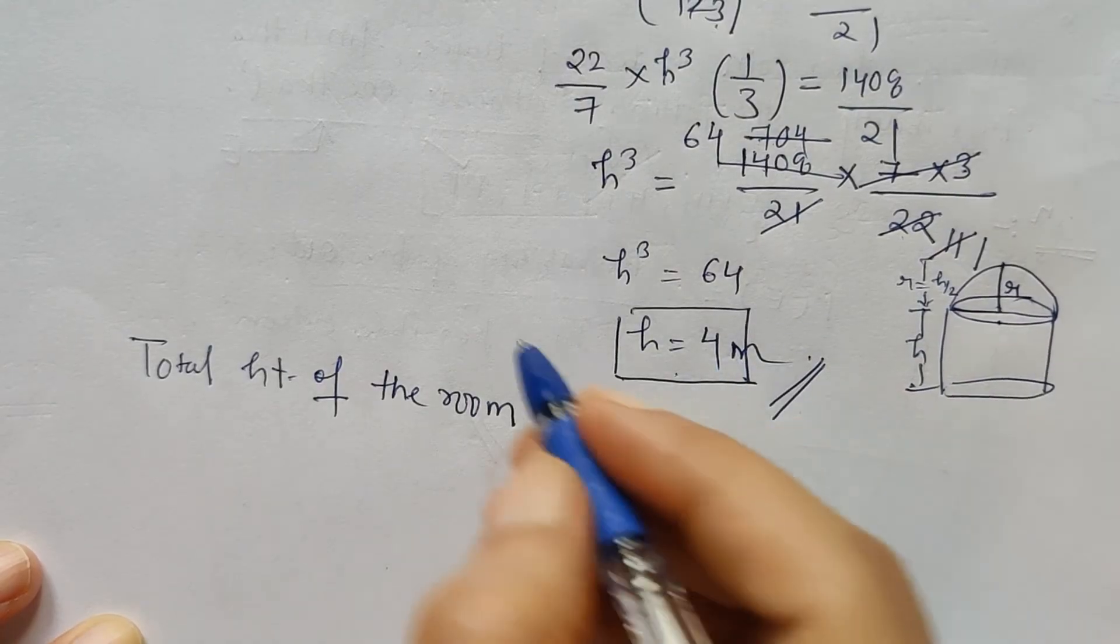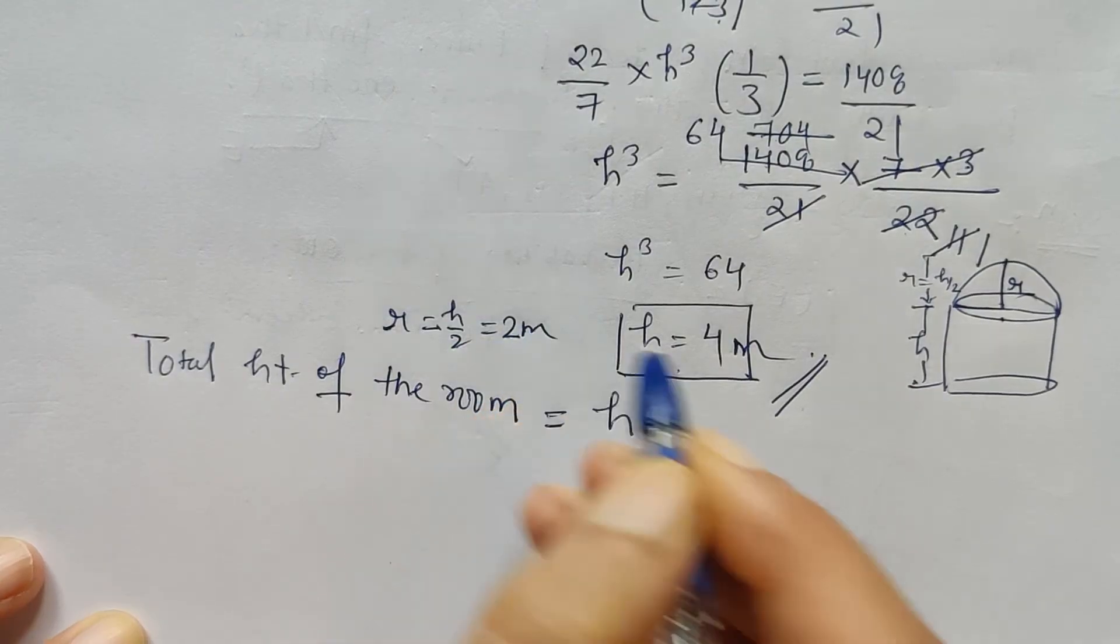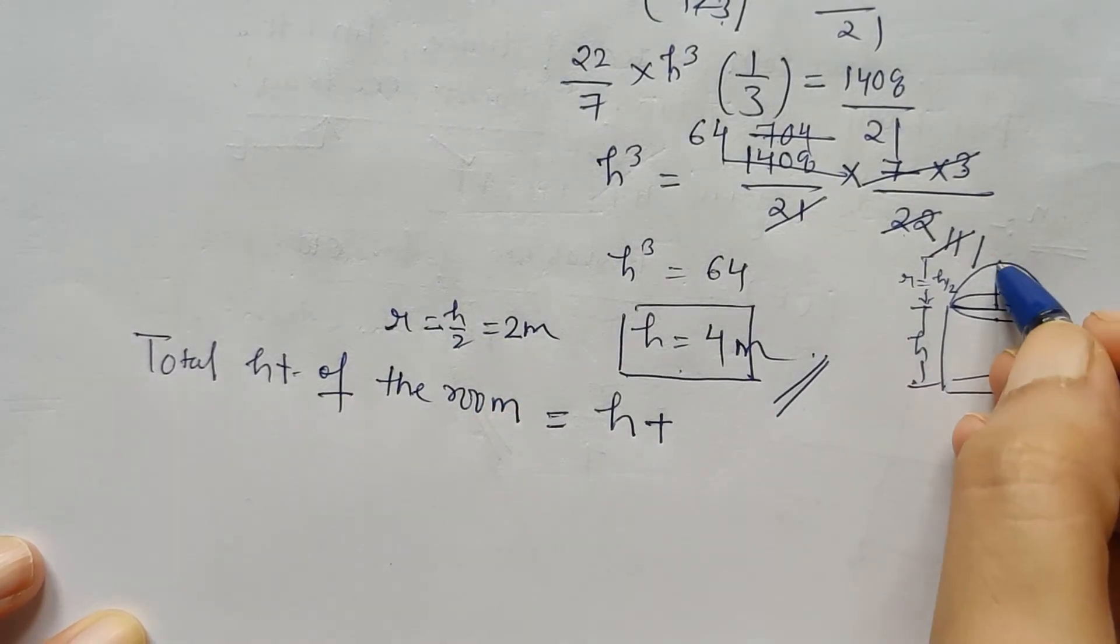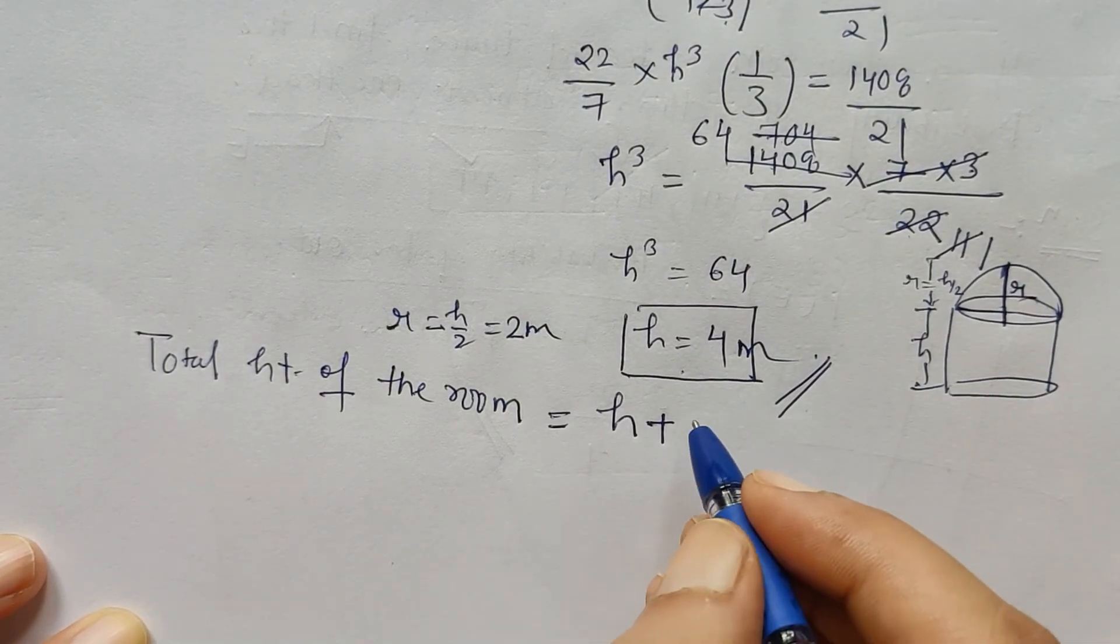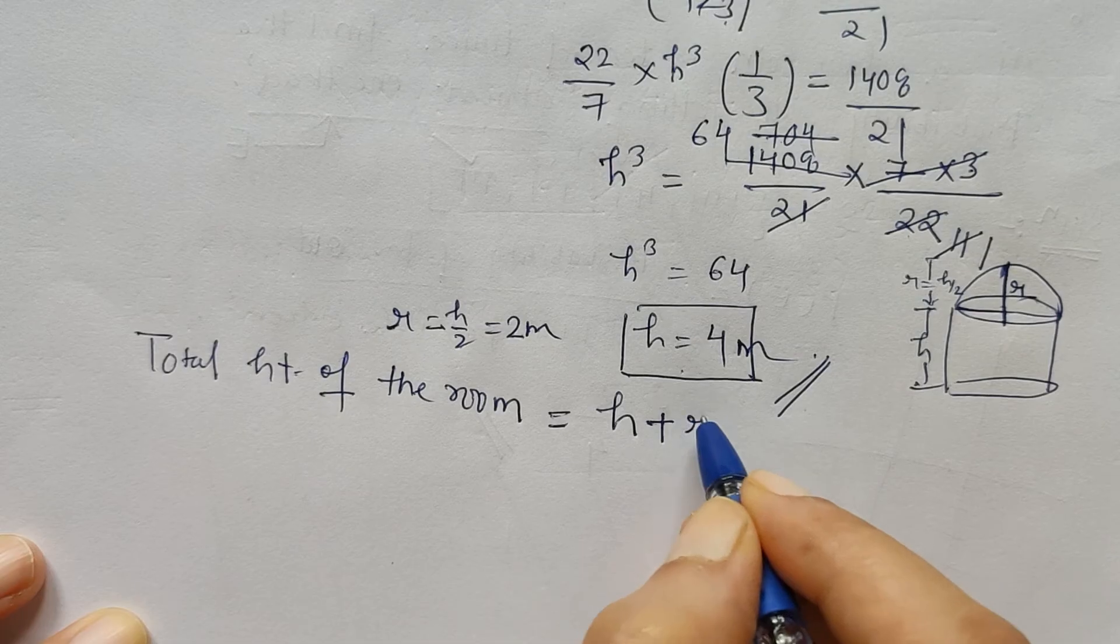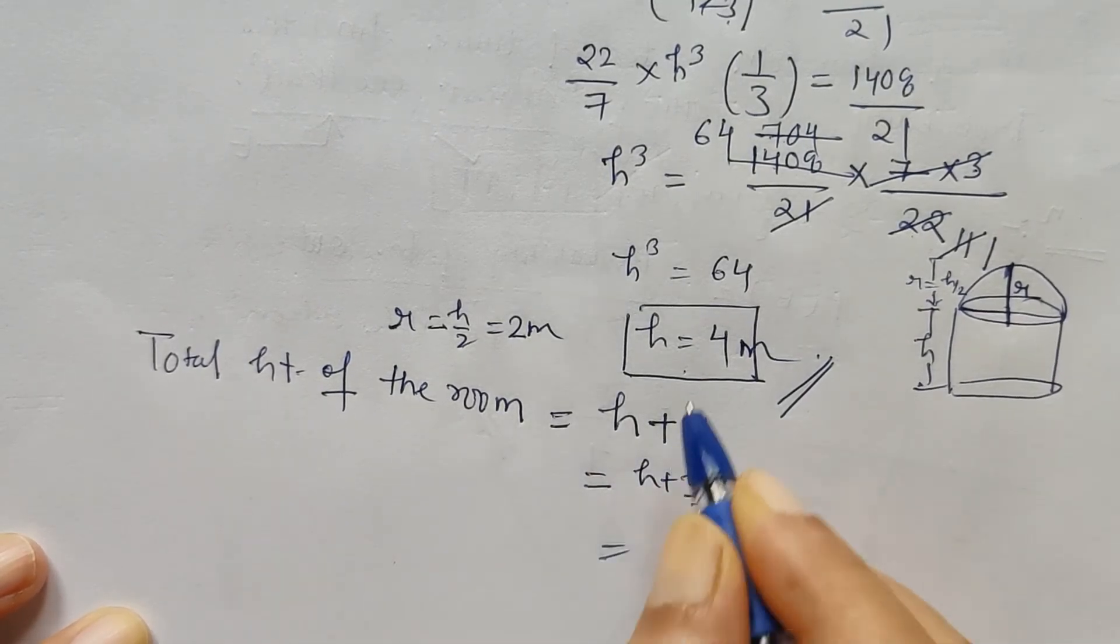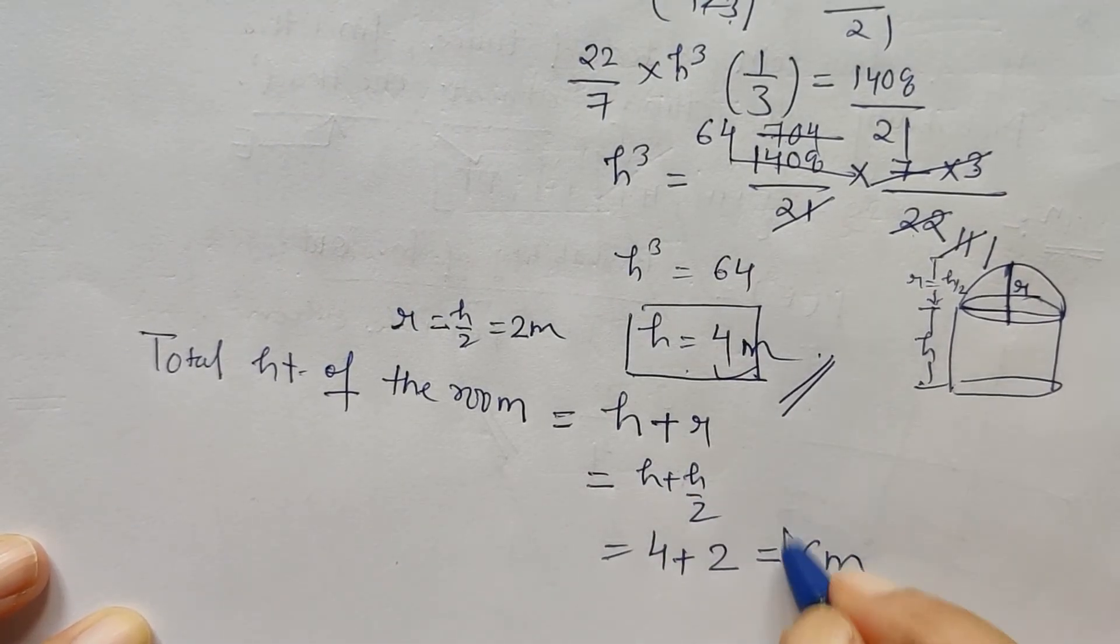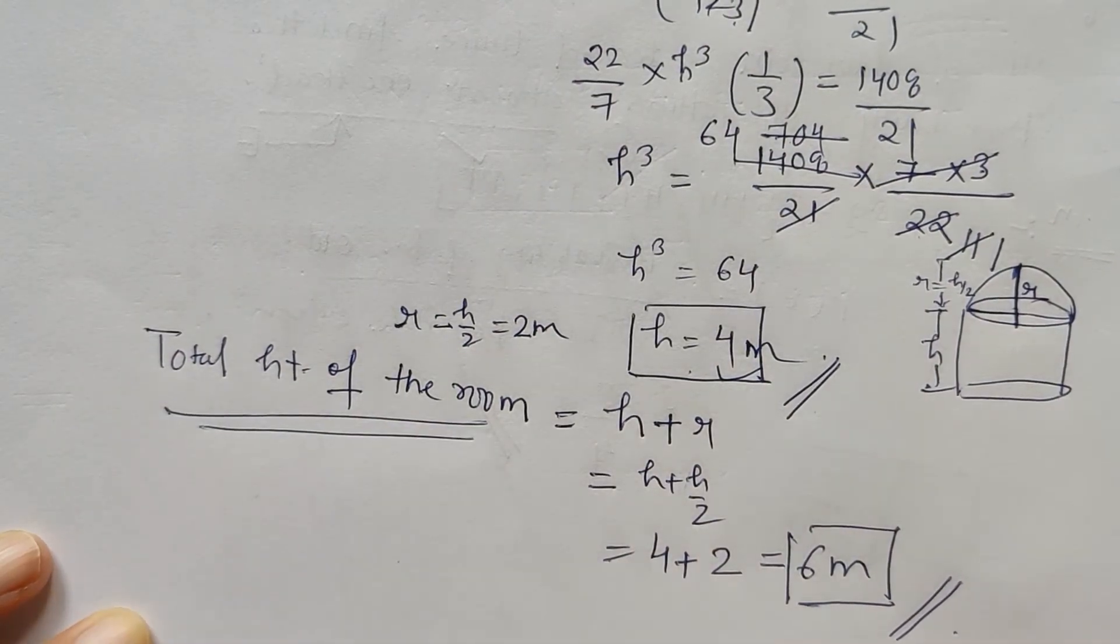So h we have already calculated, and from here value of r is h by 2, which is 2 meters. So total height of the room would be h plus the hemispherical dome-shaped surmounted piece radius. So h plus r, h plus h by 2, and h is 4 and h by 2 is 2. So 6 meters is the total height of the room. This is how this problem is to be solved.